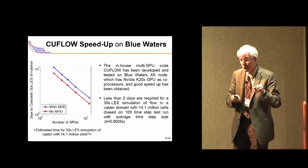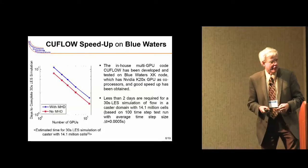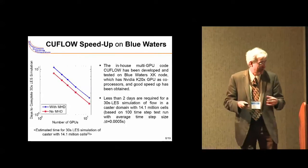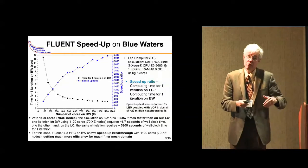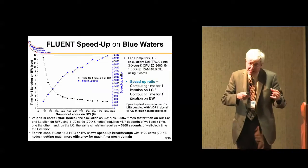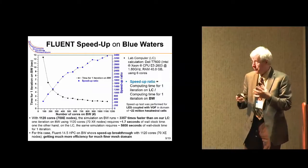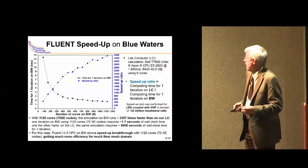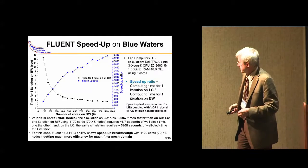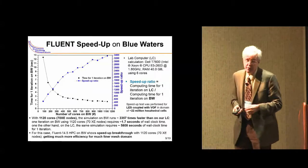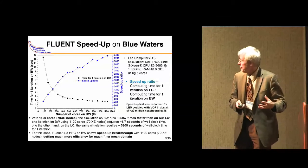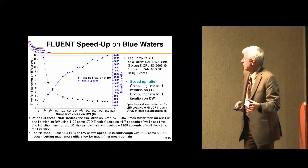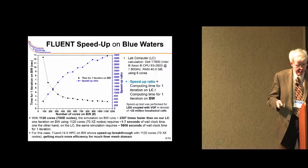Our CU flow program requires us to put in any physics ourselves. A commercial package like fluent comes with a lot of physics already built in, except getting it to run on a supercomputer like Blue Waters is a project. We've tried to do that as well and we're able to get a speed up of 3,000 times relative to our lab computer for a grid of 22 million cells. If you've got more cells and the load partitioning is good, you can get very good speed ups.